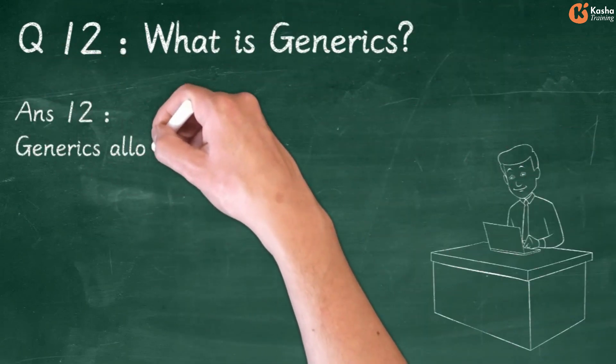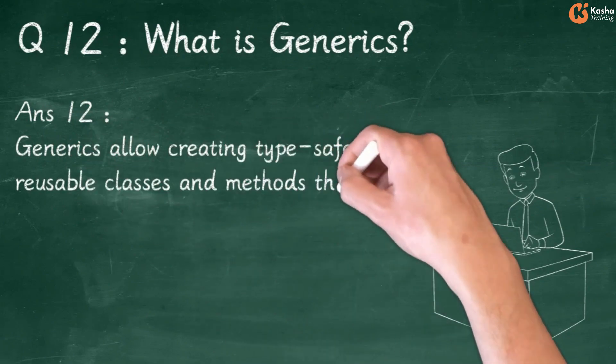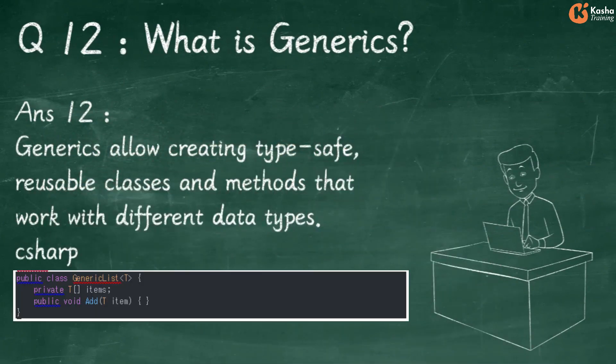Answer 12: Generics allow creating type-safe, reusable classes and methods that work with different data types. In C#: Public Class GenericList<T> has Private T Items and Public Void Add with T Item.